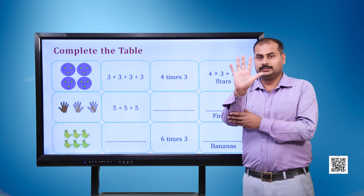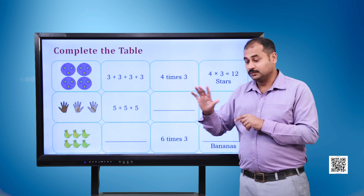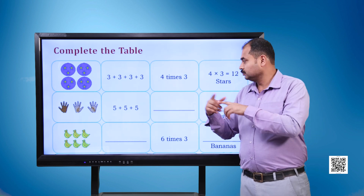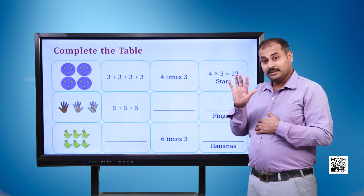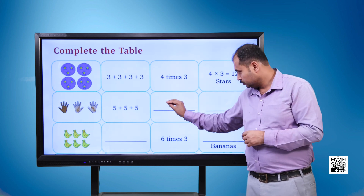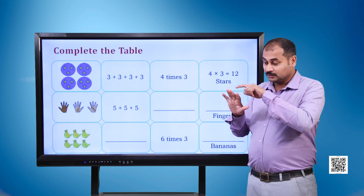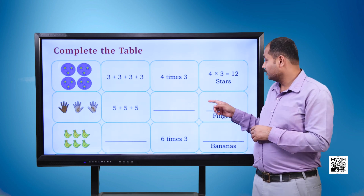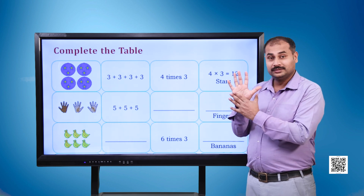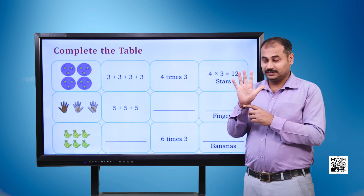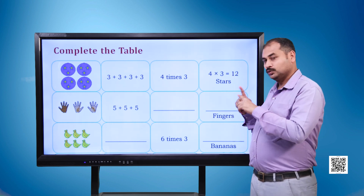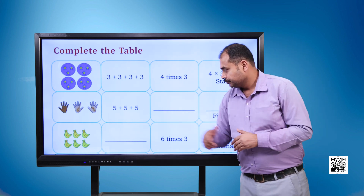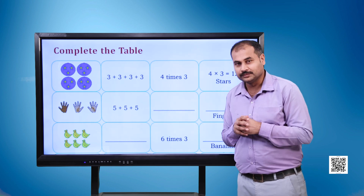In the second image, we have three hands having five fingers each: five plus five plus five. Blank space. Blank fingers. Now we have some bananas here: blank, six times three, blank bananas.